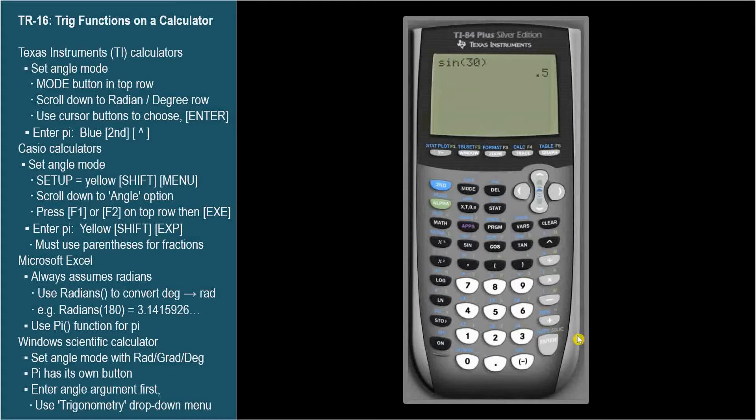Now let's find the cosine of 5 pi over 6. We need to switch to radian mode. Mode, down, down. Radians. Enter. Clear.